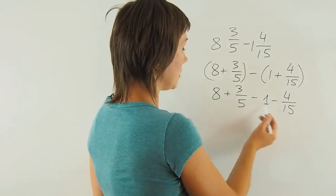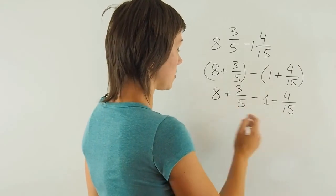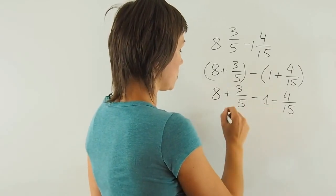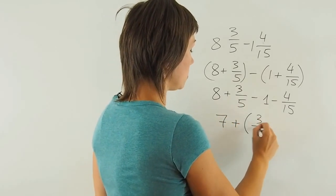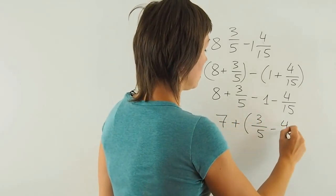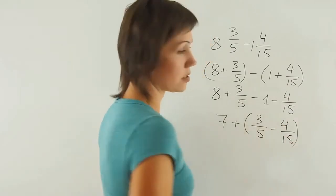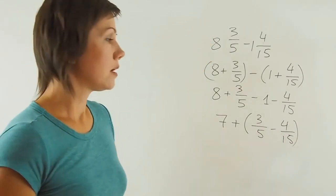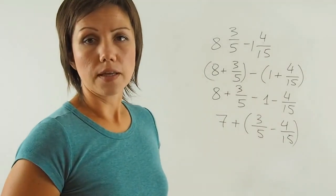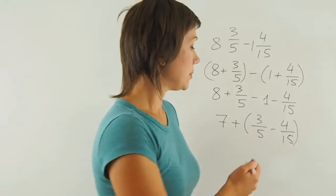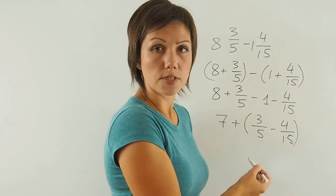Next, I'll combine the whole parts and the fraction together. 8 minus 1 is 7 plus. And I will still need to do an operation with fractions. I still need to subtract them. In order for me to subtract these two fractions, I need to find the lowest common denominator. And the lowest common denominator in this case is 15.